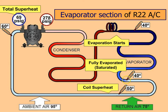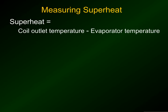From that point in the evaporator to where it begins to leave, it's designed by the manufacturer to pick up 10 degrees of superheat. Then as it travels through the rest of the suction line back to the compressor, it's now at 60 degrees with 20 degrees of superheat. Superheat is the coil outlet temperature minus the evaporator temperature.